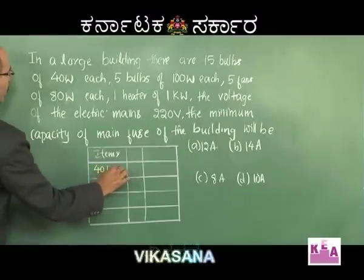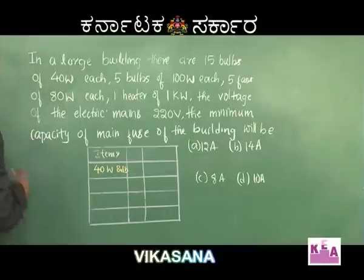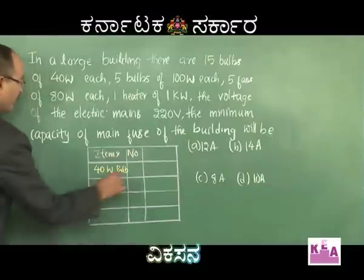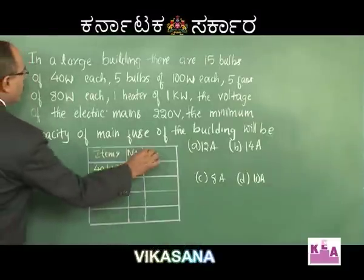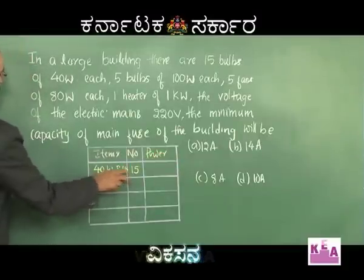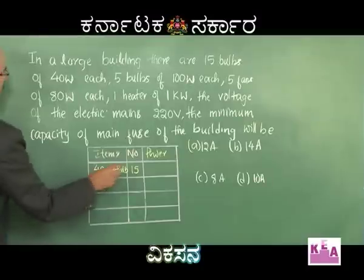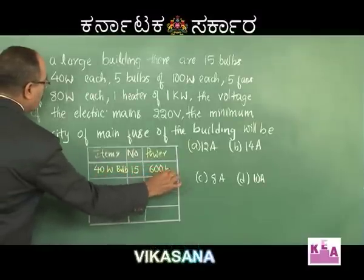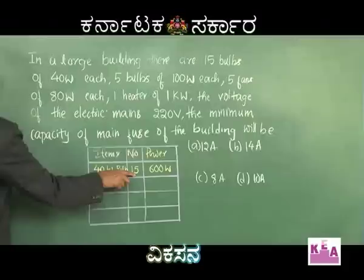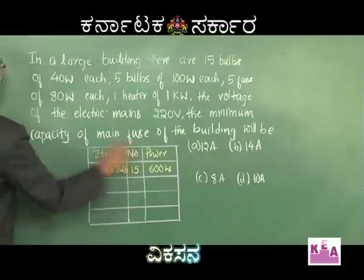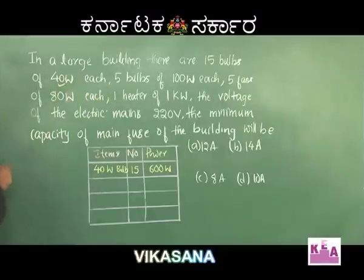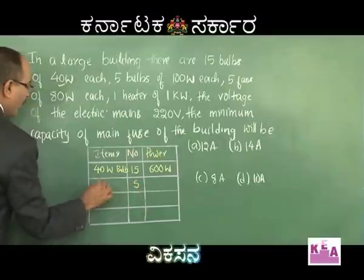15 bulbs of 40 watt: 15 × 40 = 600 watts consumed. Next: 5 bulbs of 100 watt each — 5 × 100 = 500 watts. The 40 watt bulbs (15 in number) consume 600 watts.